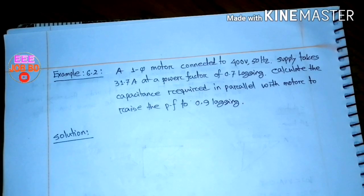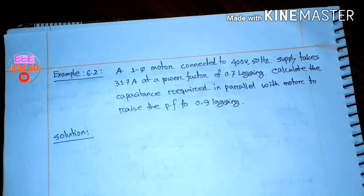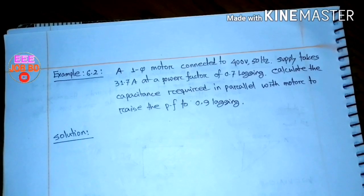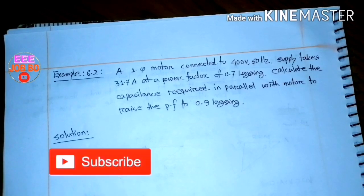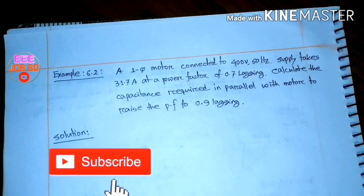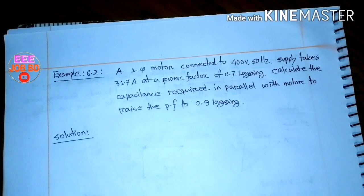The problem is a single-phase motor connected to 400 volts, 50 Hz supply. The current is 31.7 amperes and the power factor is 0.7 lagging. Calculate the capacitance required in parallel with the motor to raise the power factor to 0.9 lagging.